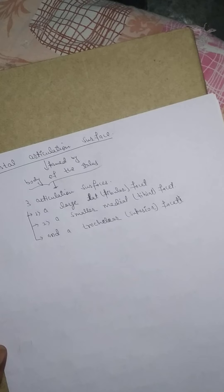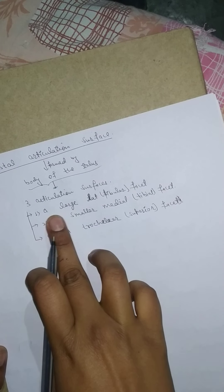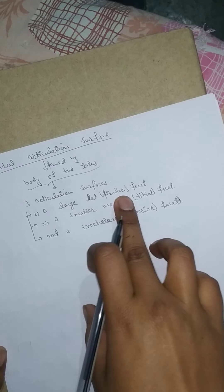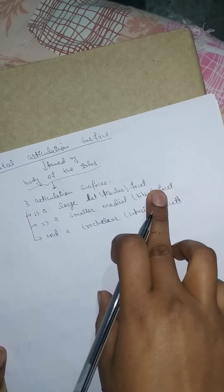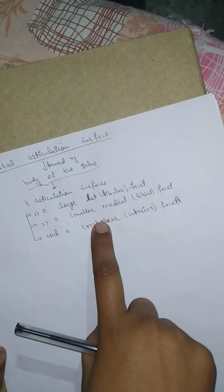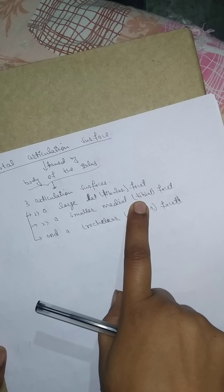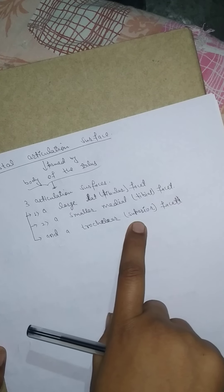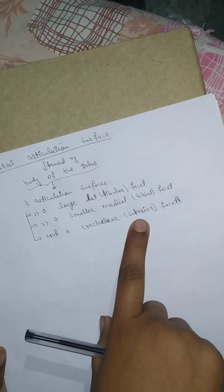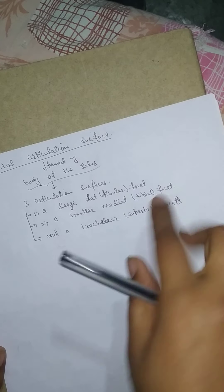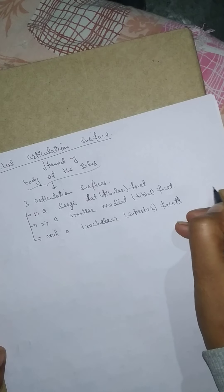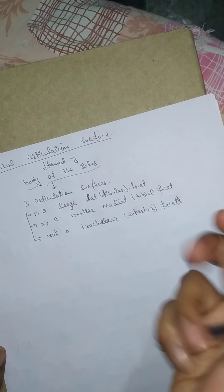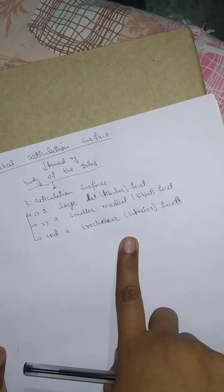The three articulation surfaces of the body of the talus are: first, a large lateral facet, also called the fibular facet; second, a smaller medial facet, also known as the tibial facet; and third, a trochlear facet, which is present superiorly — it is the most superior surface, lying between the fibular and tibial sides.